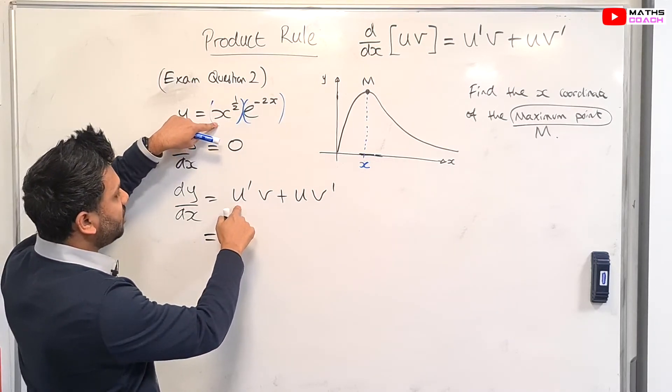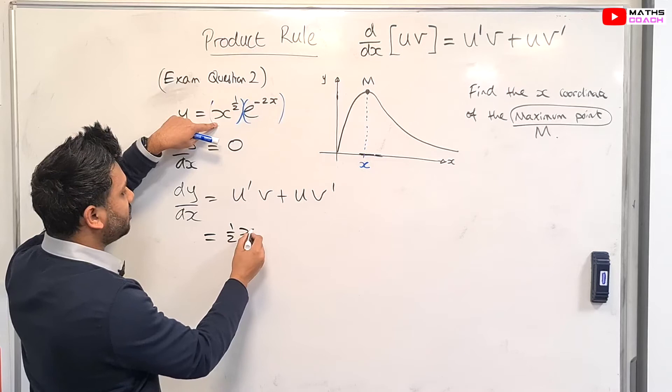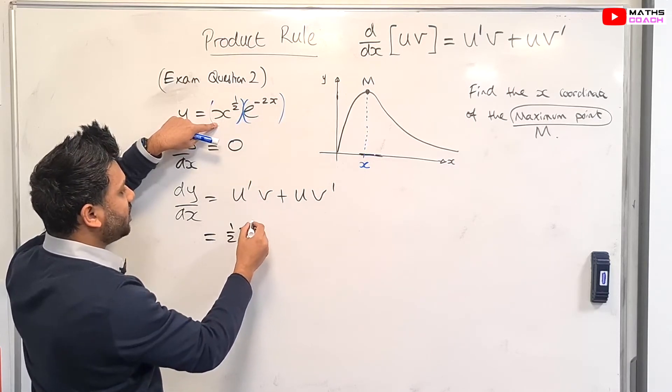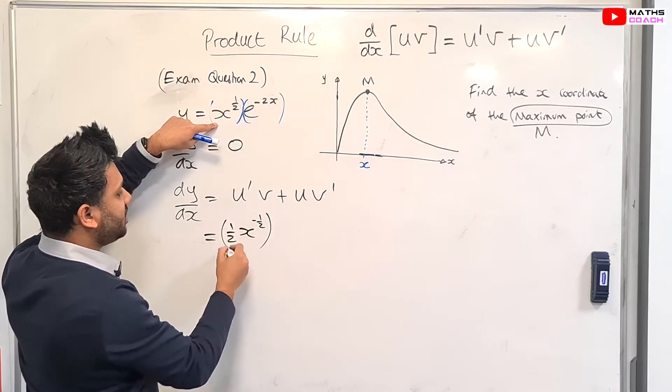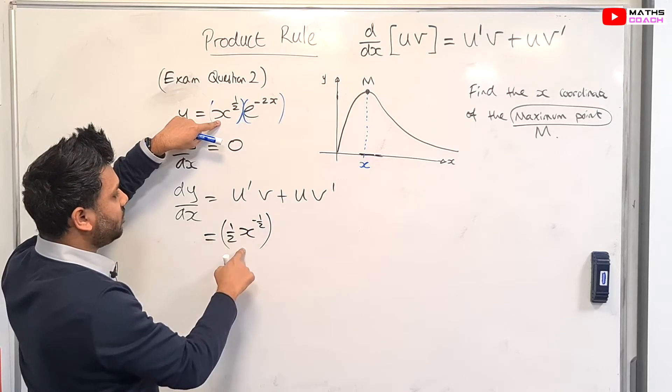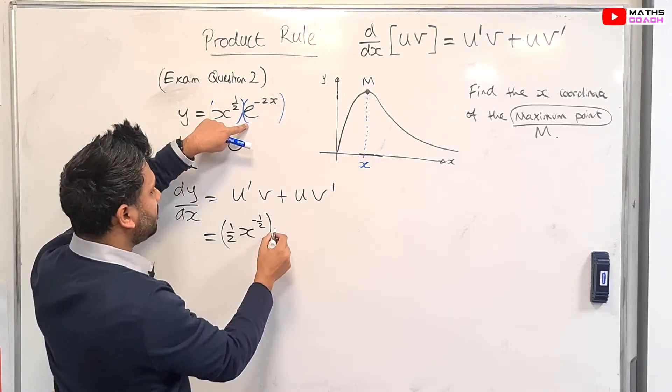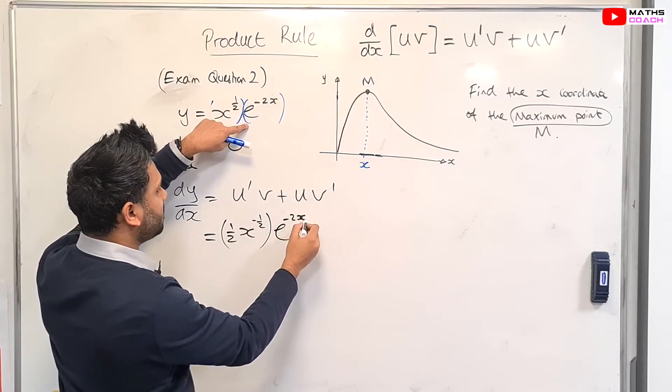So if you do u' here, that gives you a half x to the power of one less. So it'll be minus a half. That's basically the u being differentiated. That's u' times by v. That's e to the minus 2x plus.